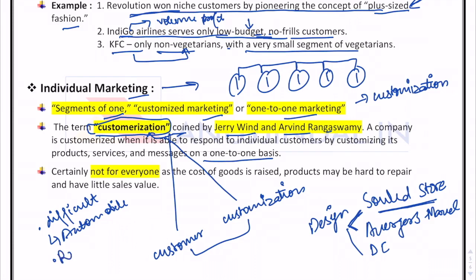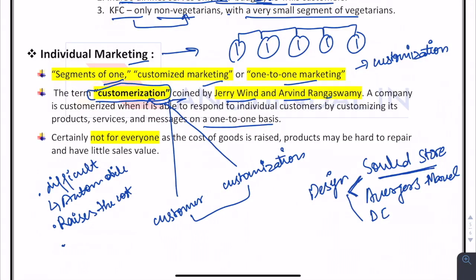However, individual marketing has many limitations. It is very difficult in the case of certain goods like automobiles and may not be profitable for the company. It raises the cost of goods, so only consumers willing to pay a premium can indulge in customization. Additionally, customers often don't know what they want until they see the actual product, and such customized products can be hard to repair and have little resale value.